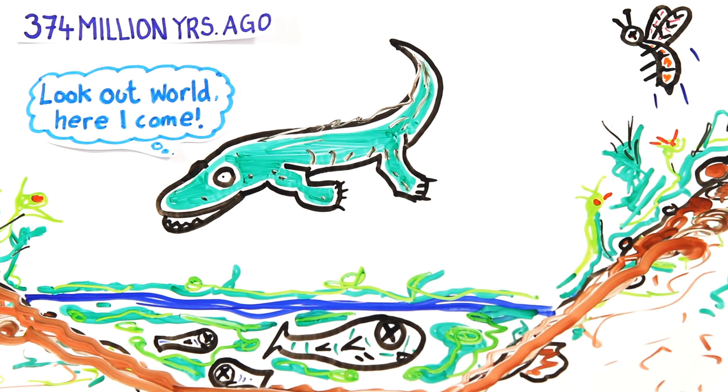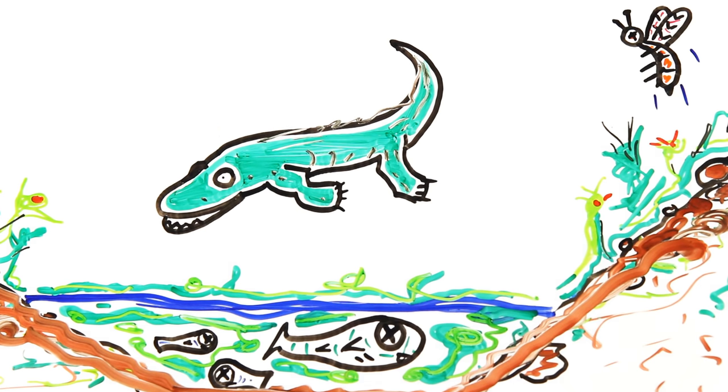Over the next 100 million years, these creatures would evolve into amphibians, reptiles, and nearly all modern land animals.